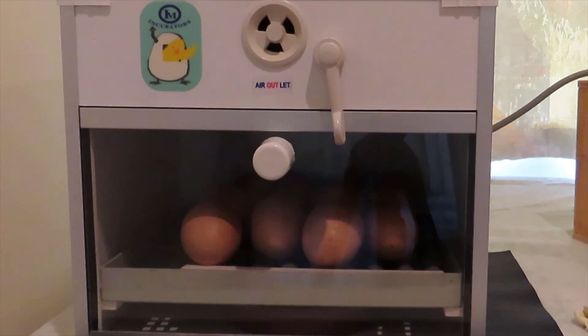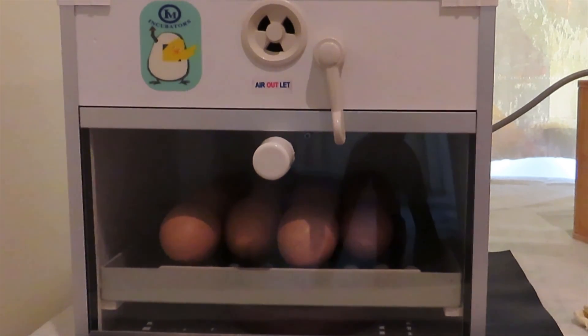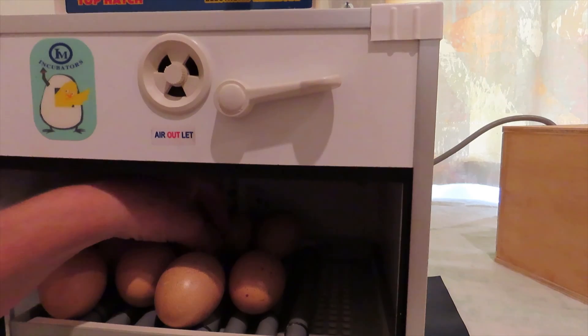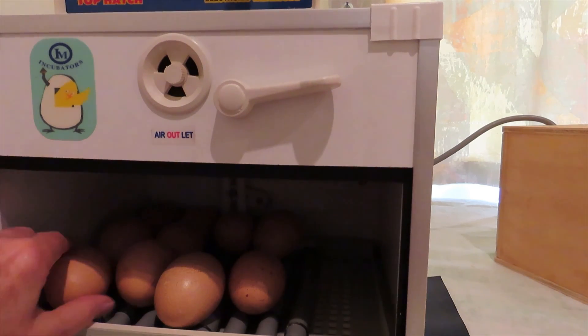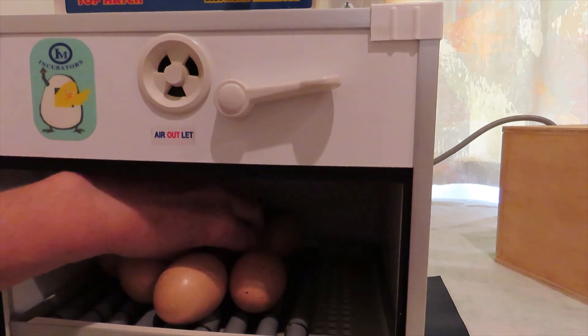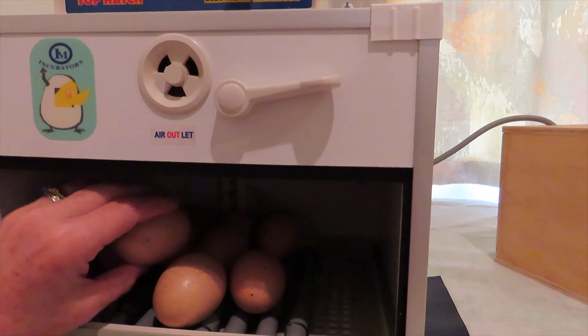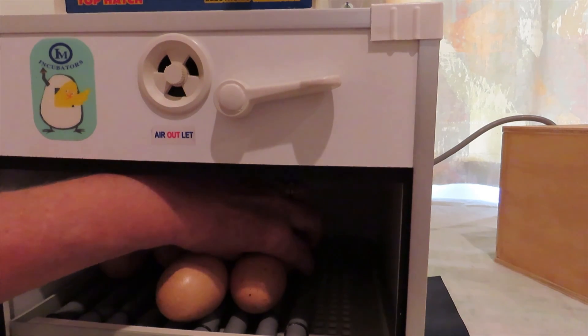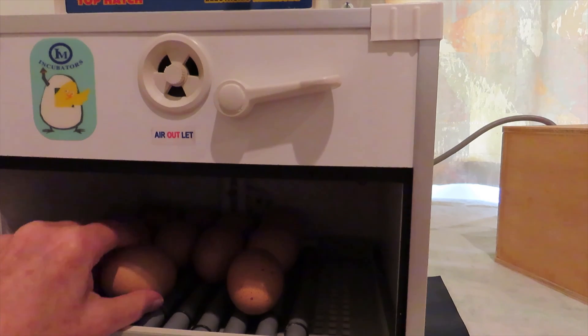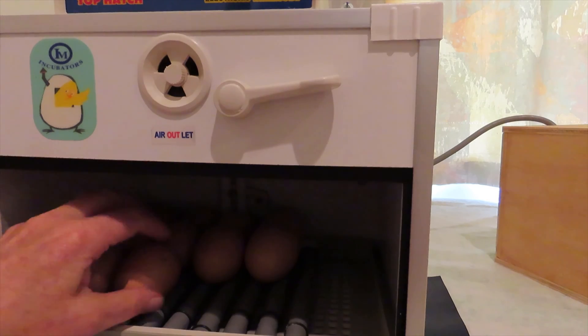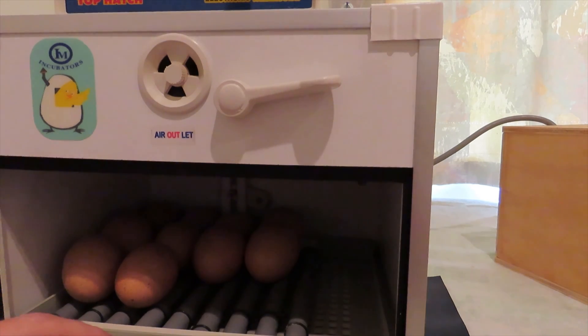Throughout incubation the rollers move from side to side about once an hour turning the eggs between a quarter and a half a turn each time and then back again. But as well as the automatic turning, once a day I also move the eggs around the incubator. This evens out any differences in temperature around the incubation chamber and makes sure that one egg doesn't sit in a cold spot or a hot spot throughout the whole incubation. At the same time I give each egg a complete turn onto its other side.